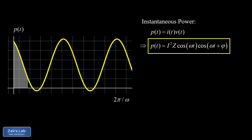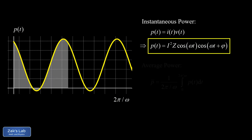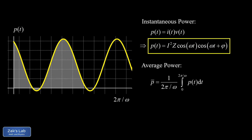Next we time-average the power function by computing an average value integral — the integral of the function over an integer number of periods divided by the interval width. We integrate from 0 to 2π/ω, the period of the original sinusoidal functions, which covers two full periods of the faster power function. The average over any integer number of periods gives the same result.